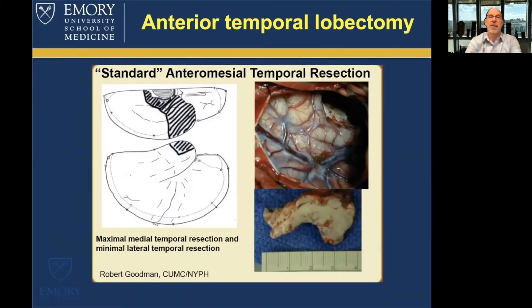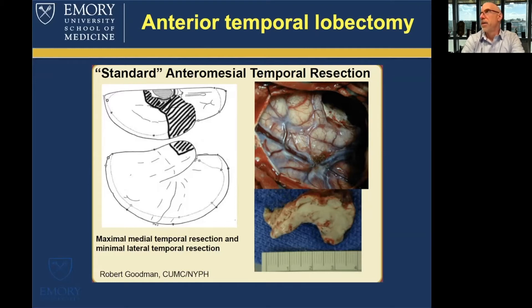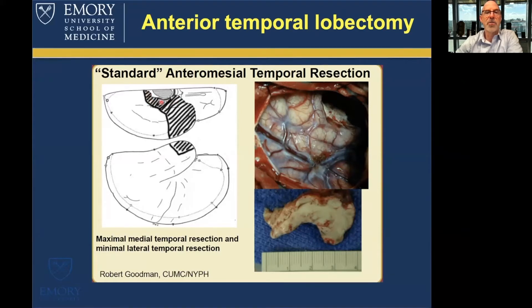Let's start with anterior temporal lobectomy. This is the standard operation I learned as a fellow at Yale University with Dr. Dennis Spencer, a towering figure in our field. He developed and published this approach in the 1980s. It involves removing a lateral portion of the anteromedial temporal lobe to gain access to the medial structures — the hippocampus from anterior to posterior and the basal temporal region — ultimately delivering an en bloc specimen typically measuring around four centimeters in length.